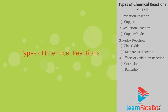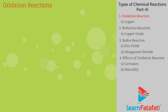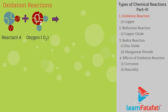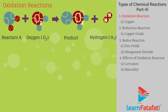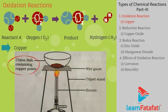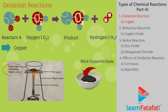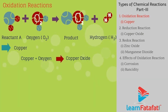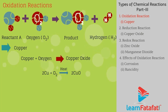Oxidation reaction: Gain of oxygen or loss of hydrogen is an oxidation reaction. Example — heat a china dish containing 1 gram of copper powder. The surface of the copper powder becomes coated with black copper oxide because oxygen is added to copper: 2Cu + O2 (heat) → 2CuO.